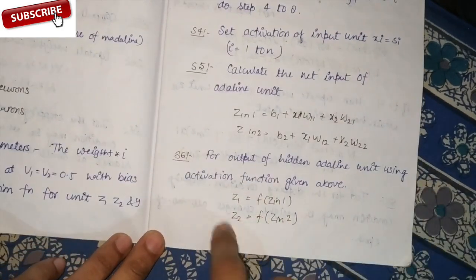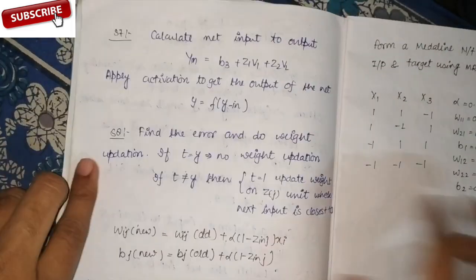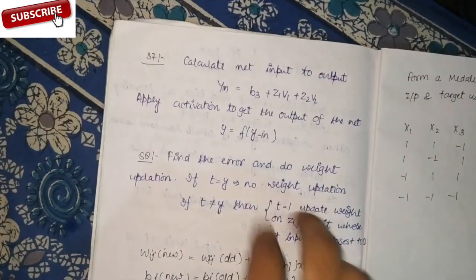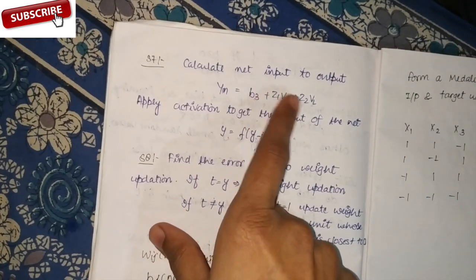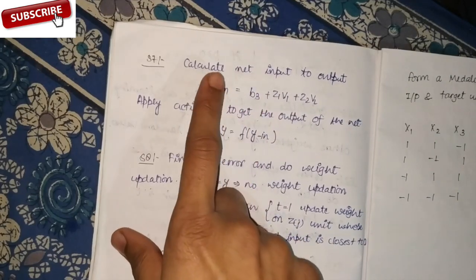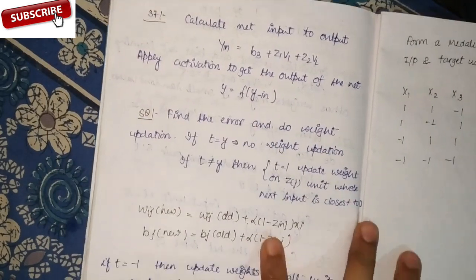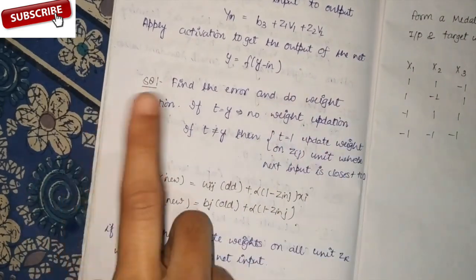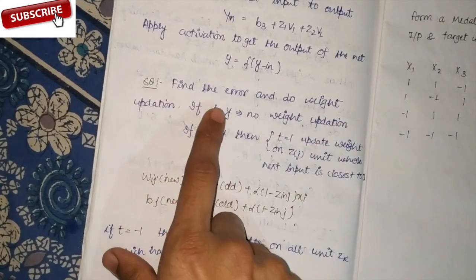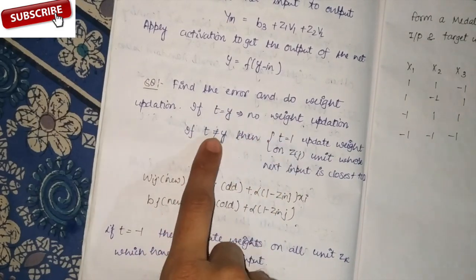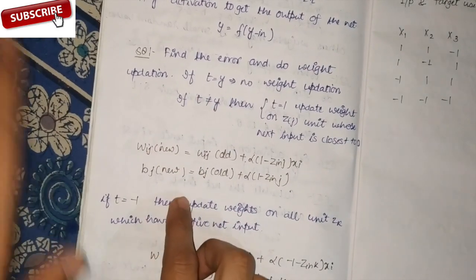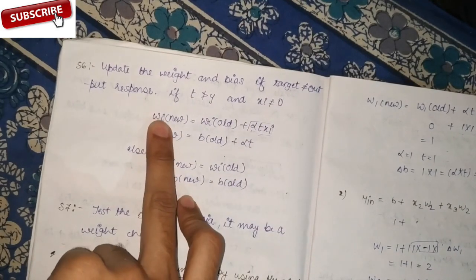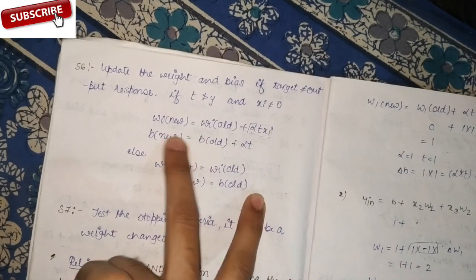Step six: for the hidden layer, apply the activation function. Yi equals the activation function applied to Zi. For the output layer, compute the net input using Y with B3 as the bias. Step seven: check the condition — if Y is equal to the target value T, then no update is needed.